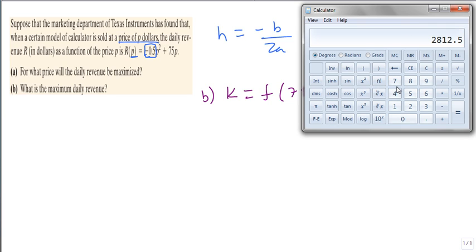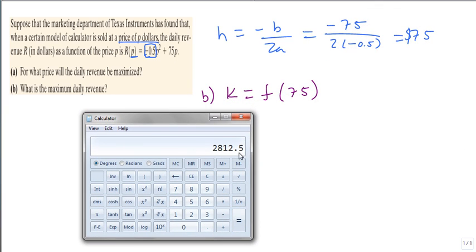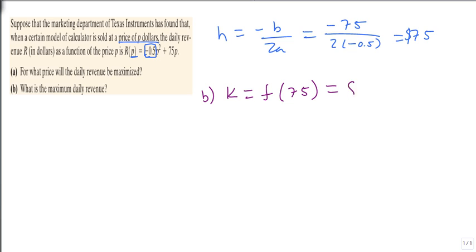And the maximum revenue we get in dollars is $2,812.50. This is our maximum price and this is how much revenue we get from just that calculator.